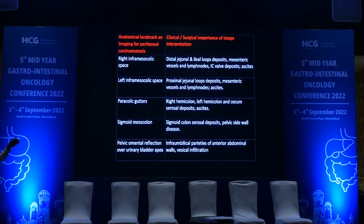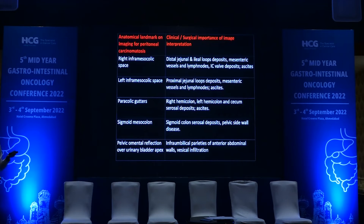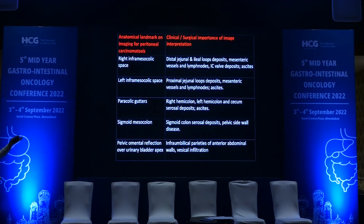Coming to the right and left inframesocolic spaces: the jejunal and ileal loops are the most important part of the entire surgical resection — whether the surgeon has to go for a mesenteric resection or a resection-anastomosis. If you offer a patient a resection-anastomosis, their lifestyle will improve; if you give them a permanent stoma, that changes things for the patient. Paracolic gutters — right and left hemicolon — serosal deposits are better seen in the paracolic regions. Sigmoid mesocolon and sigmoid colonic serosal deposits are important, and MRI is crucial for pelvic peritoneal deposits.